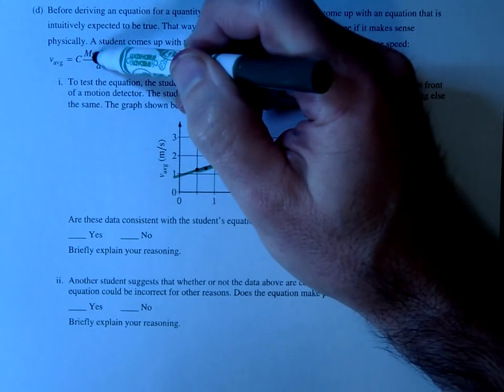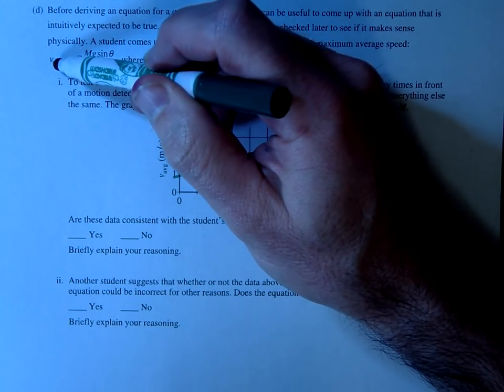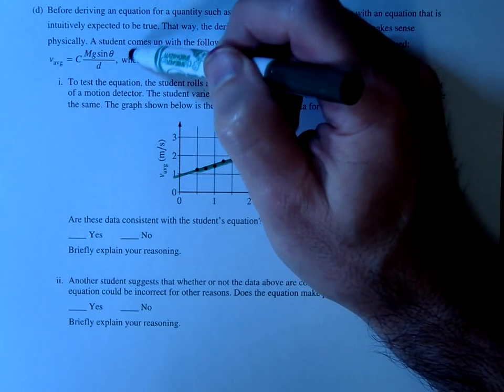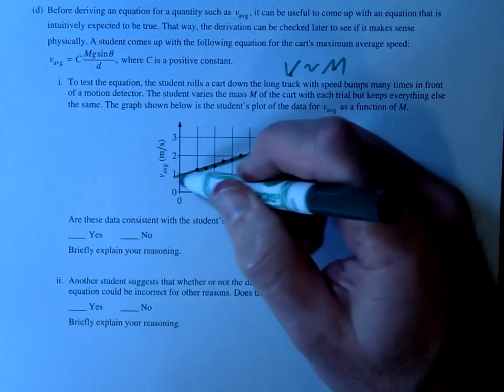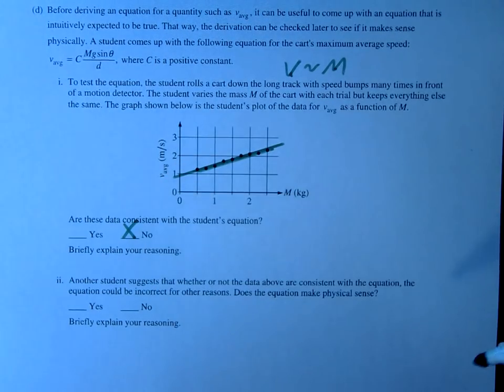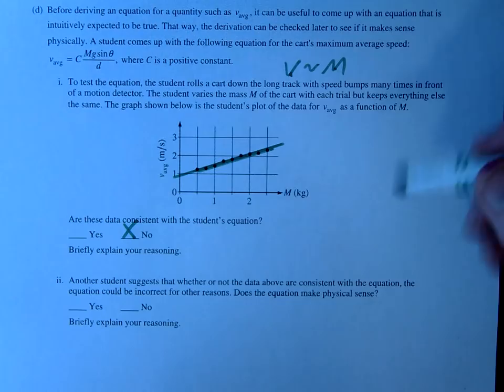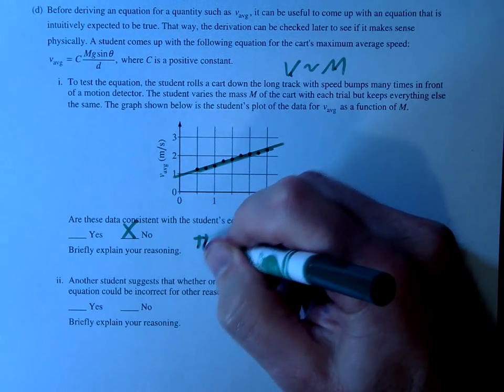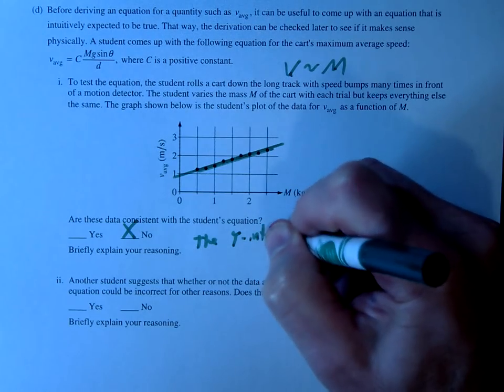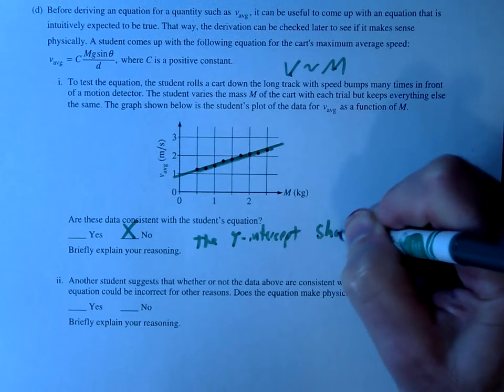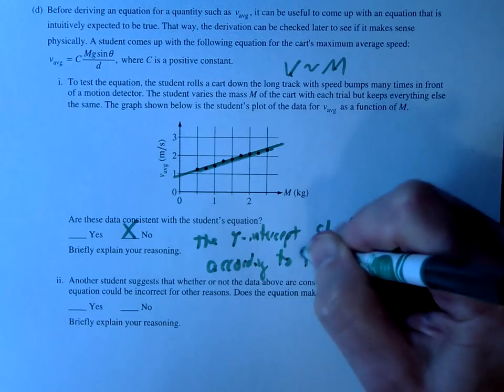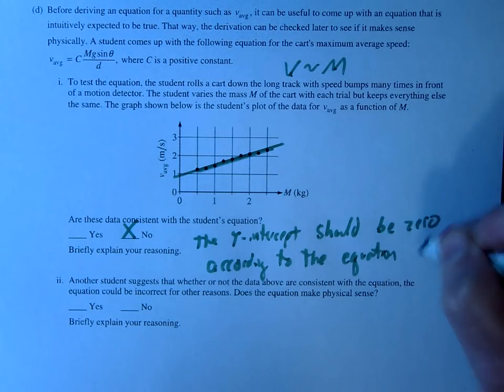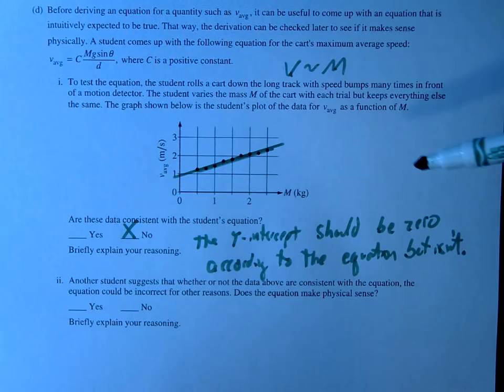Probably the more important thing to notice is the y-intercept. This is saying as the mass goes smaller and smaller, the velocity should get smaller and smaller and approach zero. There is no y-intercept, there is no B from the mx + b equation. So because of that, we're gonna have to say no. And they're probably looking for either of those reasonings that I pointed out. I would probably go at the y-intercept: the y-intercept should be zero according to the student equation but isn't. And again, you can explain a little bit more what I was explaining verbally.